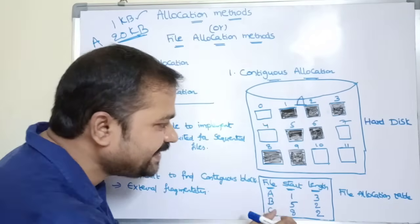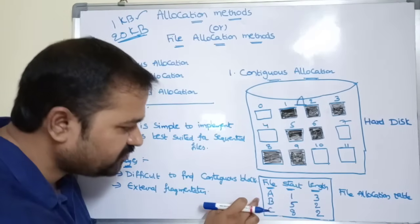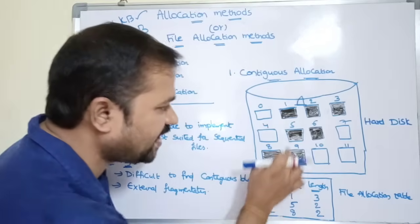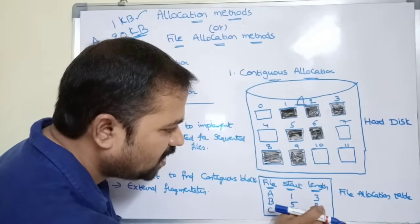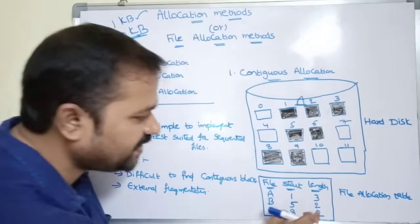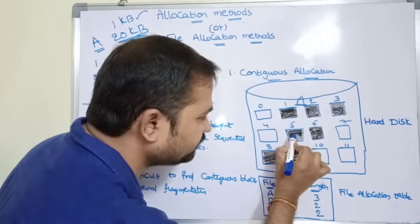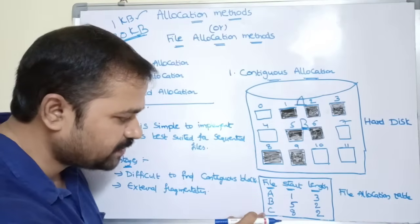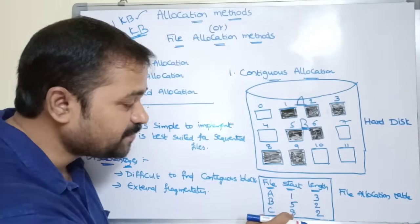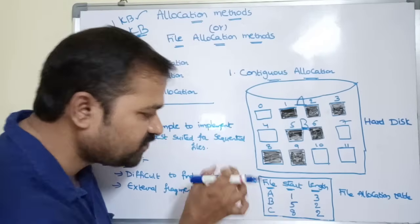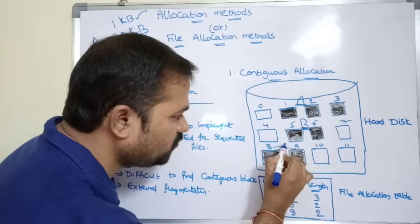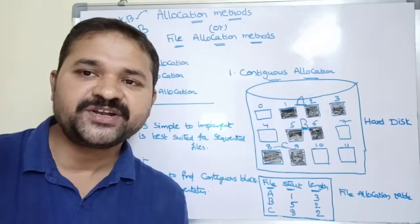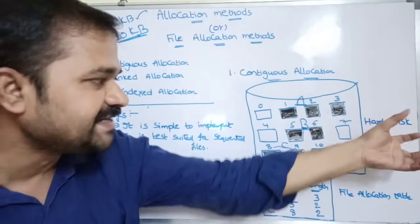For each file we have a single entry in the file allocation table. The second row shows file B with starting block number 5 and length 2 blocks, so blocks 5 and 6 are occupied by B. The third row is for file C with starting block 8 and length 2 blocks, so those two blocks are occupied by C. This is how the file allocation table contains information about files stored in the hard disk.